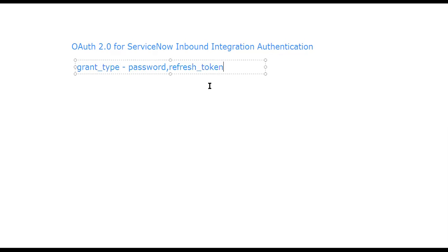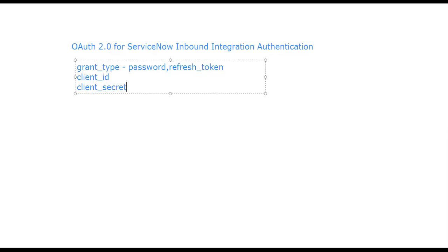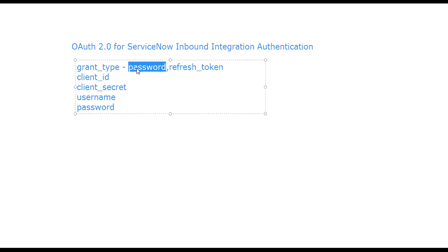You will be sharing the client ID and client secret for OAuth 2.0, along with a username and password. Username and password are only required when the grant type is password. If the grant type is refresh token, the access token is obtained through the refresh token and username/password won't be required.